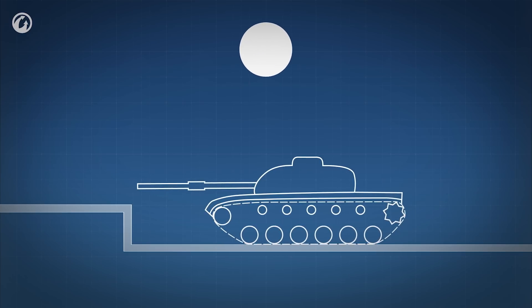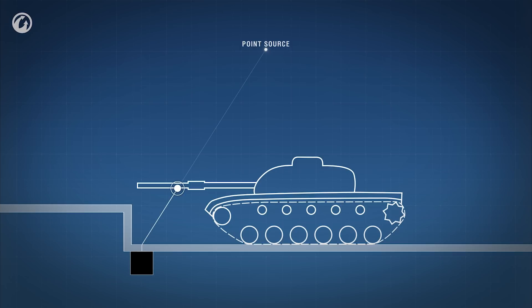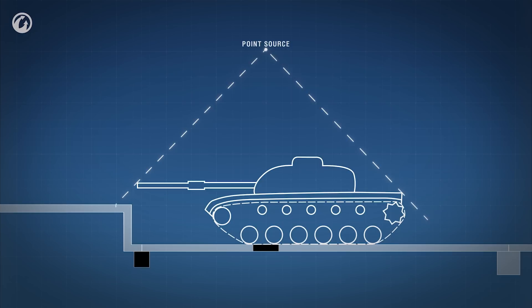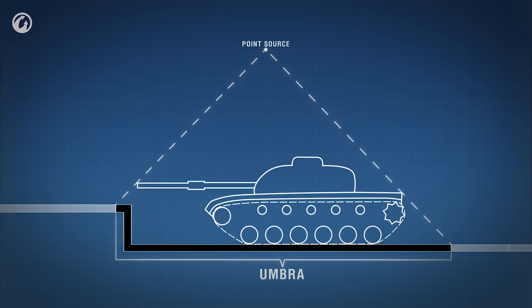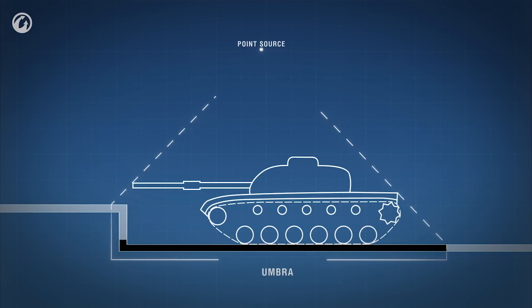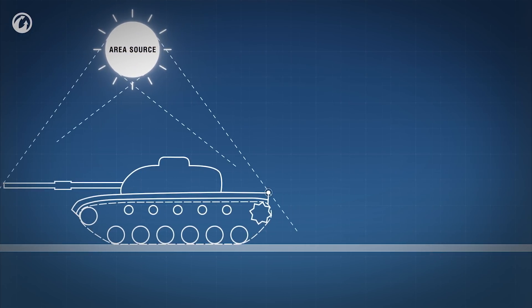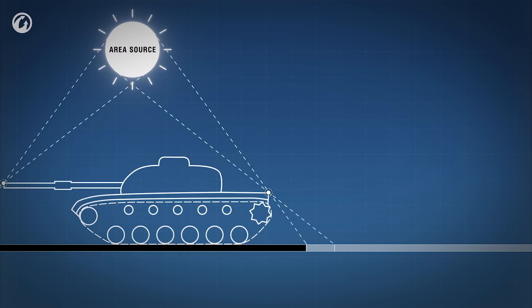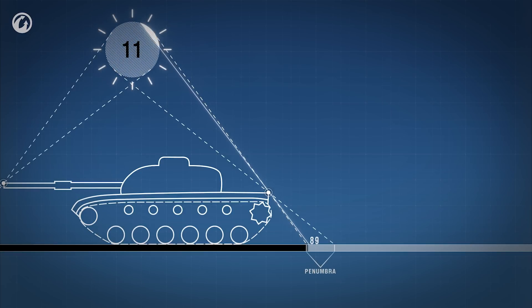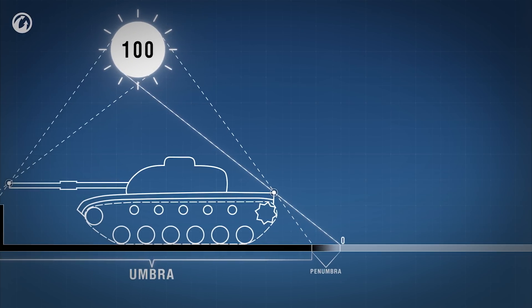The next problem to be solved was creating soft shadows. In video games, a light source — for example the sun — is often represented by a point to optimize the load on the graphics card. As a result, only two scenarios are possible: the point on the ground is either covered by an obstacle and can't see the light source, in which case there's a shadow, or vice versa. In reality, the light source emits light from many points on its surface. For a point on the ground, the sun can be partially covered by an obstacle — it illuminates a point on the ground not with all its surface, but just a part of it.